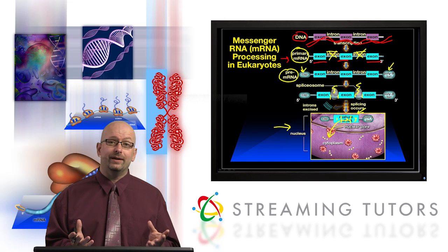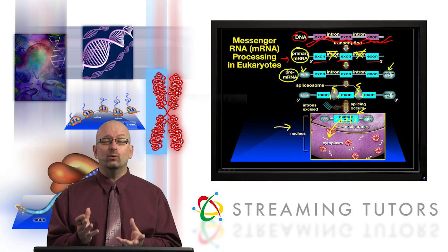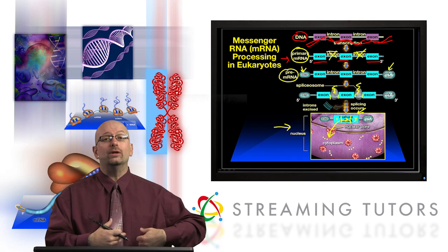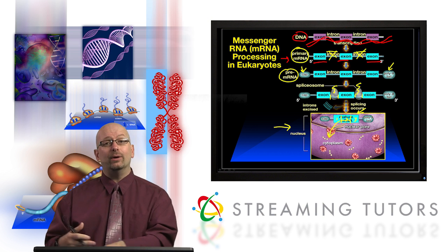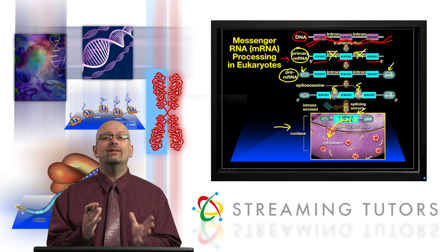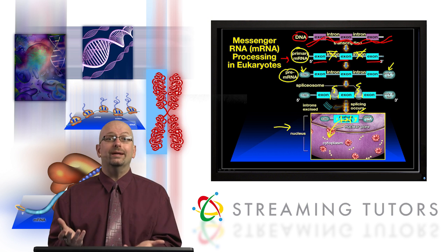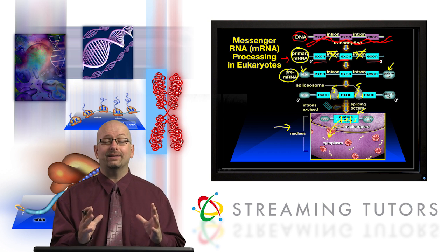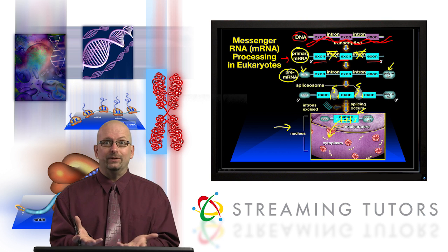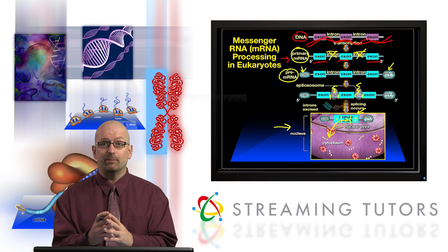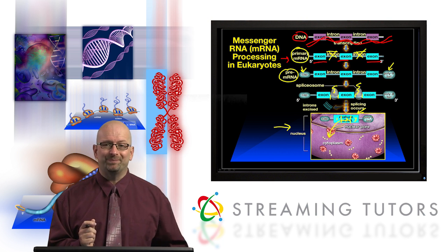Eukaryotes have sequestered the DNA in the nucleus. Introns have to be removed, and it's safe to do that in the nucleus and only release a completely mature, ready-to-go messenger RNA out into the cytoplasm. Even if there was no splicing, in eukaryotes transcription would have to be decoupled from translation because of the mere fact of the nuclear sequestration of the DNA.